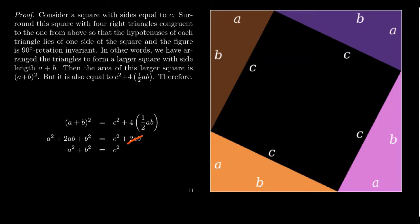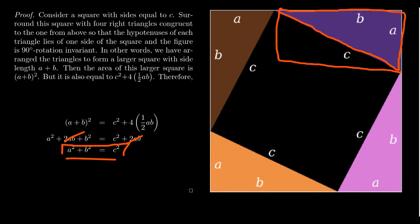If you subtract 2AB from both sides, you get the Pythagorean equation: A² + B² = C². Using area formulas of rectangles — squares being a special case, and a right triangle being half a rectangle — you can very easily prove this Pythagorean equation analytically.